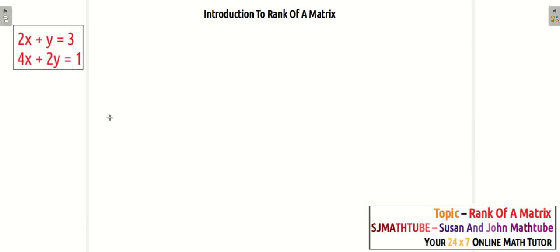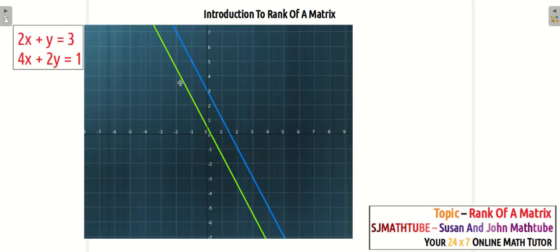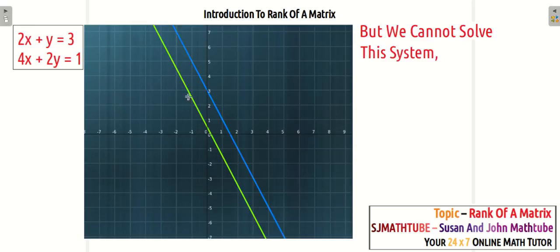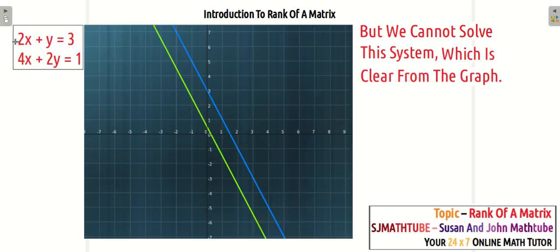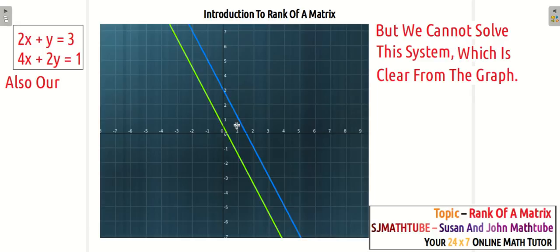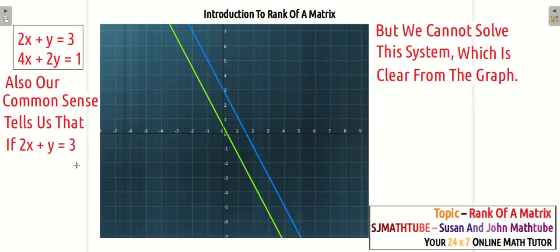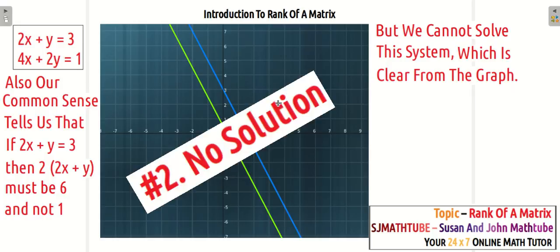Let us go for the second system. Graphically, the second system will look like this — they are parallel lines. You can check the slope of the first line and the second line. If you try to solve these two equations, you are going to get something foolish. If you multiply the first equation throughout by 2 and subtract, you will get something like 6 is equal to 1. Basically, you will not be able to solve because the graph has no common point. Our common sense tells us that if 2x plus y is equal to 3, then 2 times (2x plus y) should be 6 and not 1. So that's it: no solution.